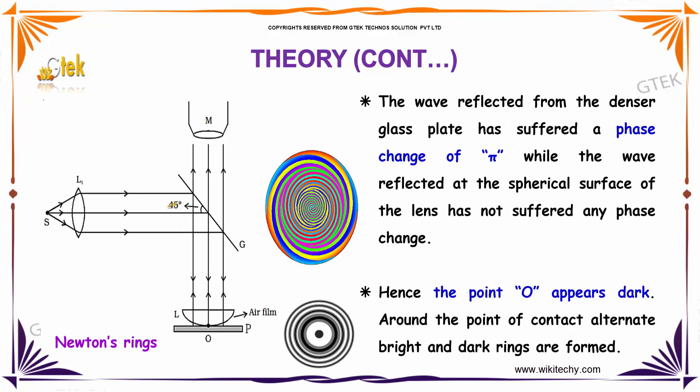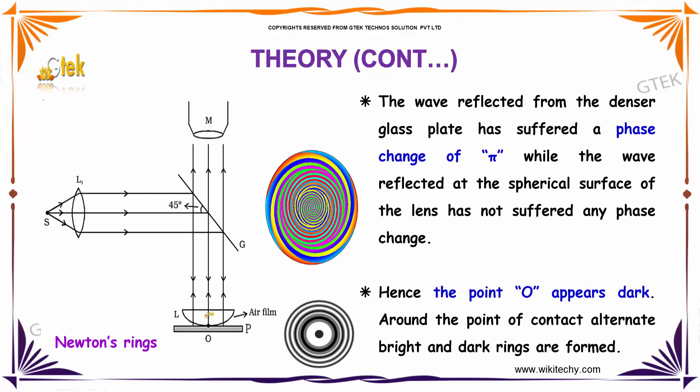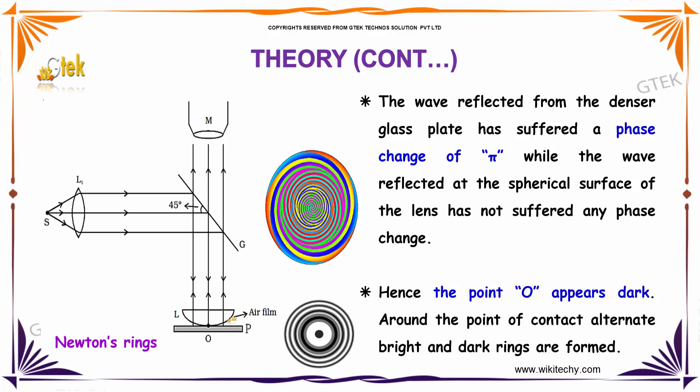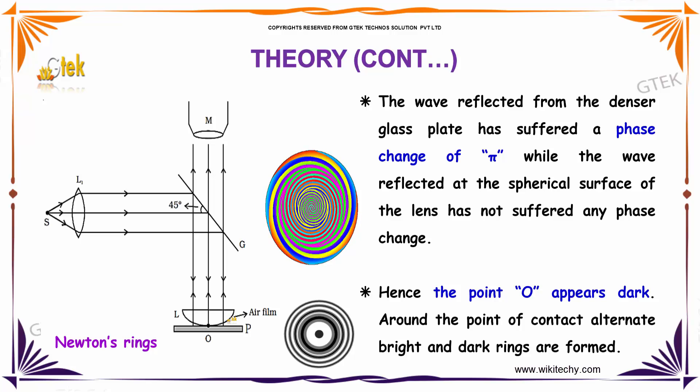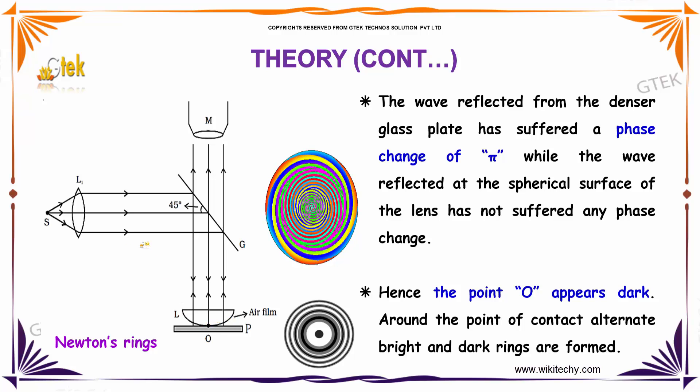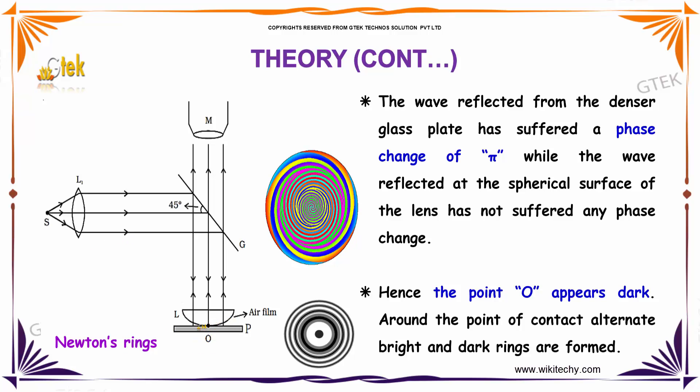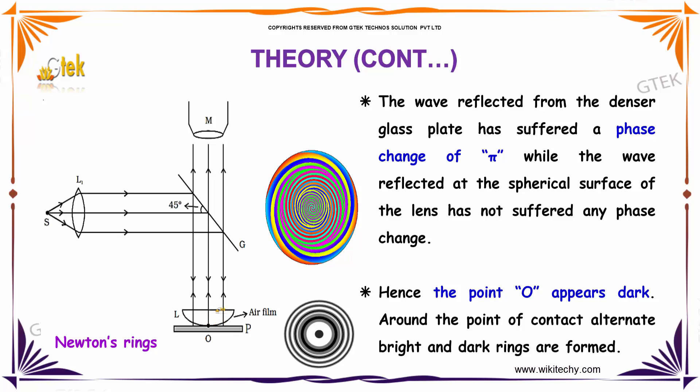The wave reflected from the denser glass plate has suffered a phase change of π, while the wave reflected at the spherical surface of the lens has not suffered any phase change.